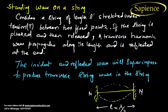First, what is a standing wave on a string? Consider a string of length L held under tension T between two fixed points. When the string is plucked and released, a transverse harmonic wave propagates along the length, is reflected at the end, and the incident and reflected waves superimpose to produce a transverse standing wave.